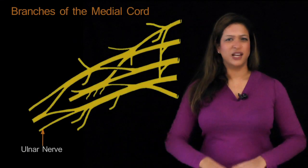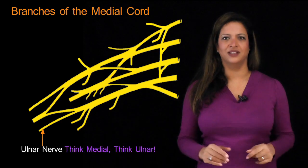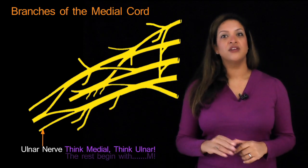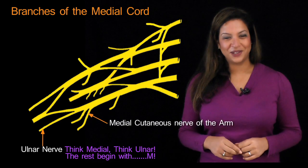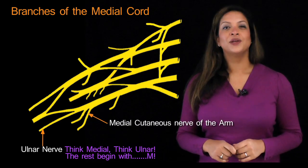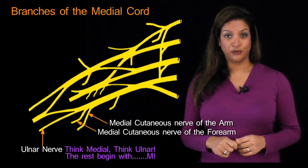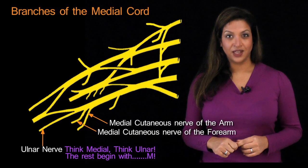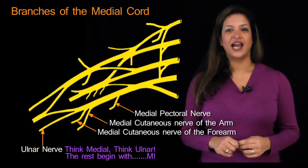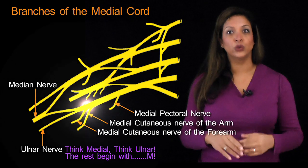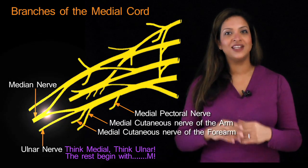The medial cord gives off five branches. The first is the ulnar nerve — whenever you think medial, think ulnar. The other four all begin with M: the medial cutaneous nerve of the arm, the medial cutaneous nerve of the forearm, the medial pectoral nerve, and the contribution from the medial cord to the median nerve.